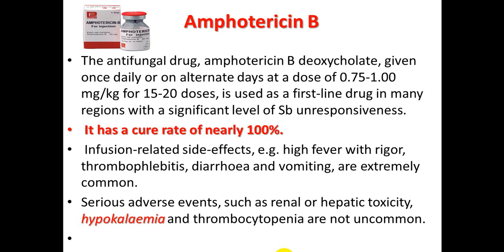As the disease is endemic in South America and India, new treatment modalities emerged. Amphotericin B, which is more costly than pentavalent antimony, is the antifungal given once daily or on alternate days at a dose of 0.5 to 1 mg/kg for 15 to 20 doses, and is used as first-line drug in many regions with significant resistance to pentavalent antimony.